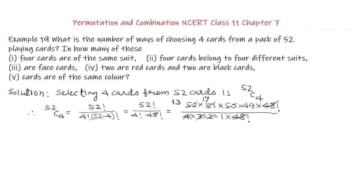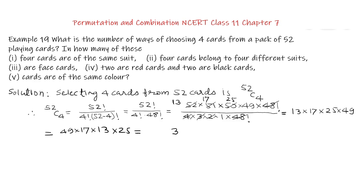And 2 of the denominator cancels 50 for 25 times. So this is equal to 13 × 17 × 25 × 49. We multiply 49 by 17: 17 times 9 is 153, write 3 and carry 15; 17 times 4 is 68 plus 15 is 83. So this gives us 833, multiplied by 13 multiplied by 25.